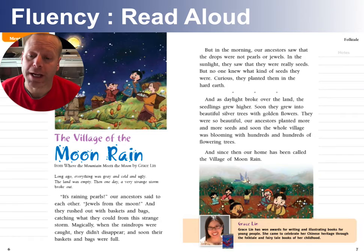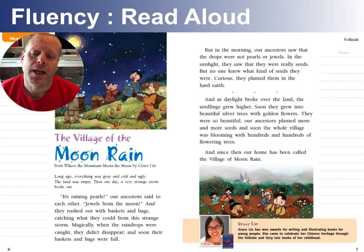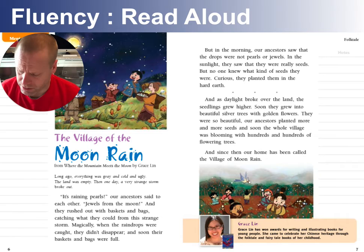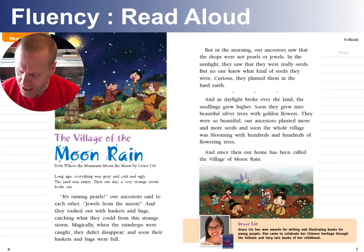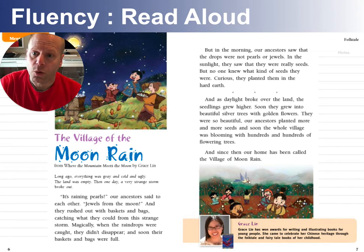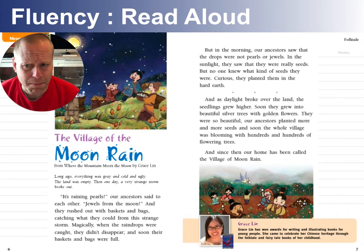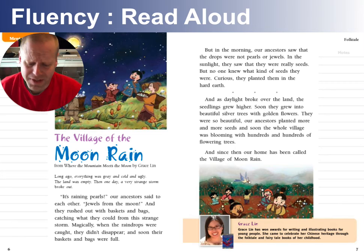The Village of the Moon Rain. Long ago, everything was cold and gray and ugly. The land was empty. And then one day, a very strange storm broke out. 'It's raining pearls,' our ancestors said to each other. 'Jewels from the moon.' And they rushed out with baskets and bags, catching what they could from this strange storm. When the raindrops were caught, they didn't disappear, and soon their baskets and bags were full. But in the morning, our ancestors saw that these drops were not pearls or jewels. By the sunlight, they saw that they were really seeds. But no one knew what kind of seeds they were.